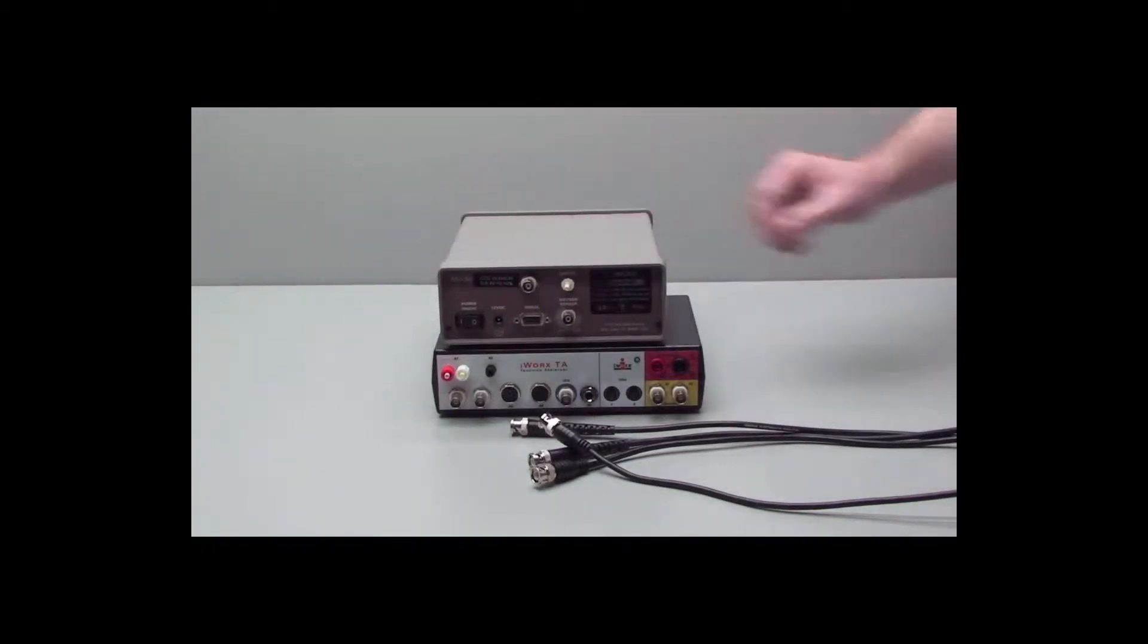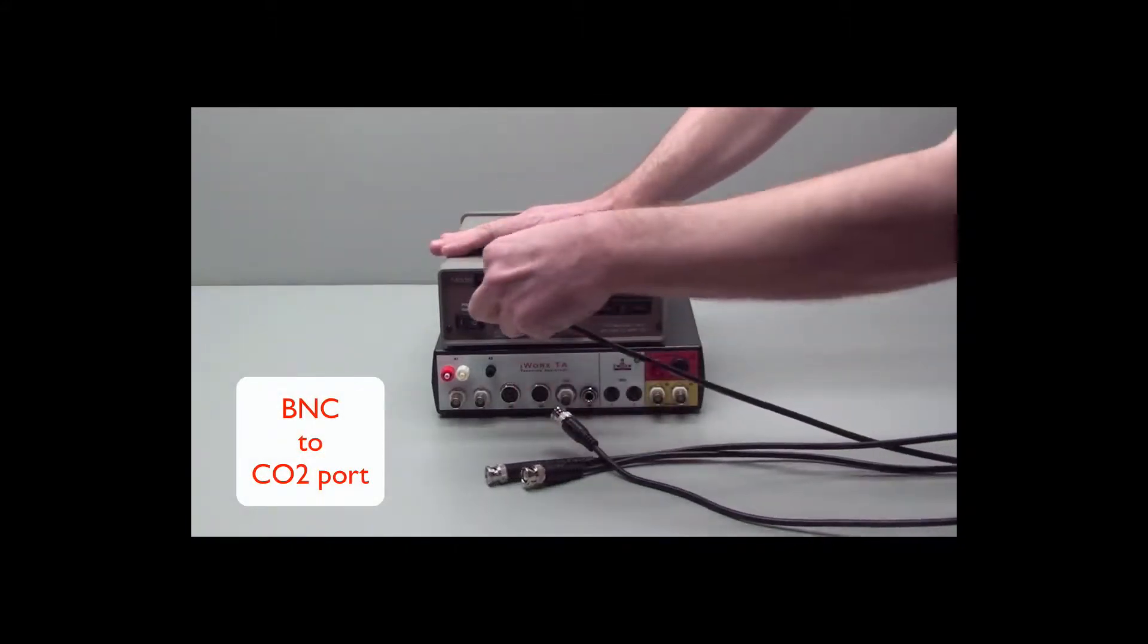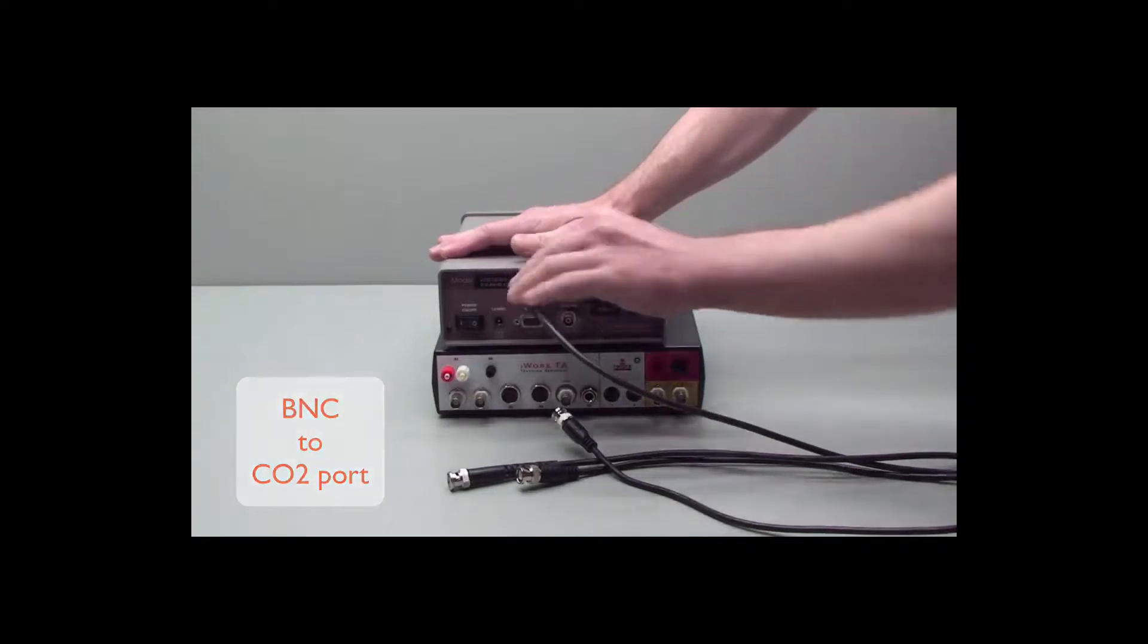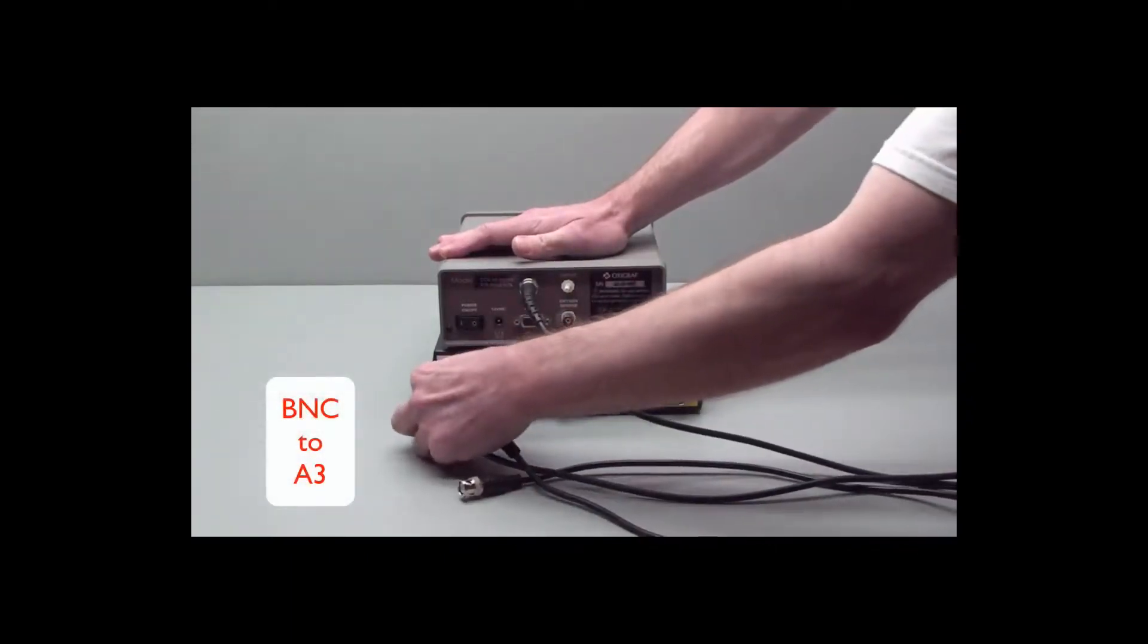With the supplied BNC to BNC cables, take one BNC that goes to your CO2 port, and the other end goes to channel A3 of the TA.